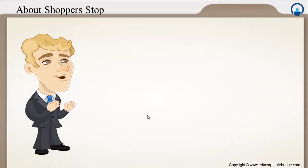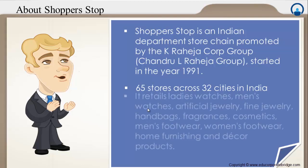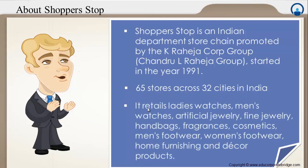So let's have a look at the company profile of Shopper Stop. Shopper Stop is an Indian department store chain, promoted by the K. Raheja Corporation Group, and it was started in the year 1991. It is spread across 32 cities in India and has over 65 stores. It retails various products including ladies watches, men's watches, artificial jewelry, handbags, fragrances, footwear, home furnishing and decor products.